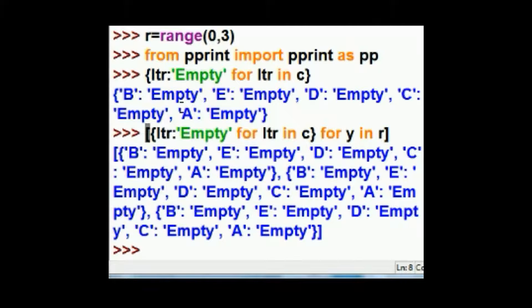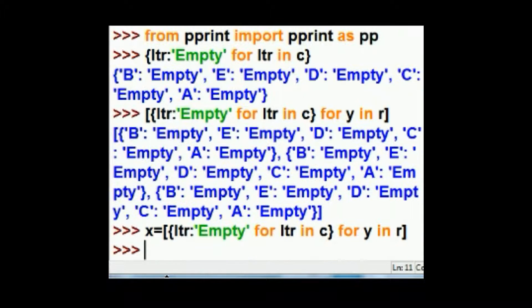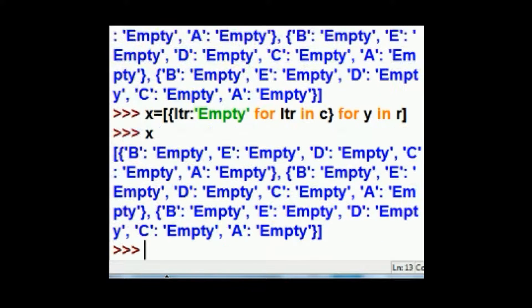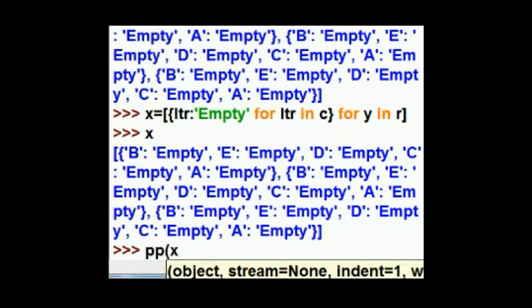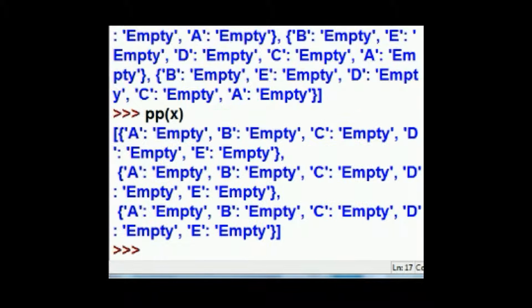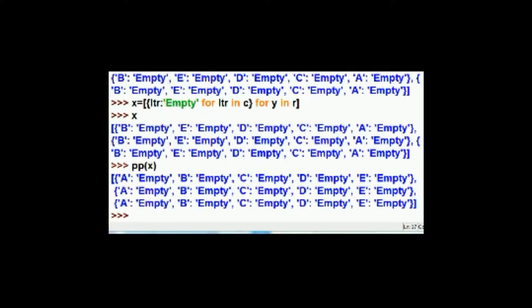I have to key that whole thing in again. I don't want to have to do that. So this time I'm going to assign this to a variable called x. And then I get the same mess when I key in x. Unless I pretty print it. ppx. And then I get something that looks a lot better. This is what I get.